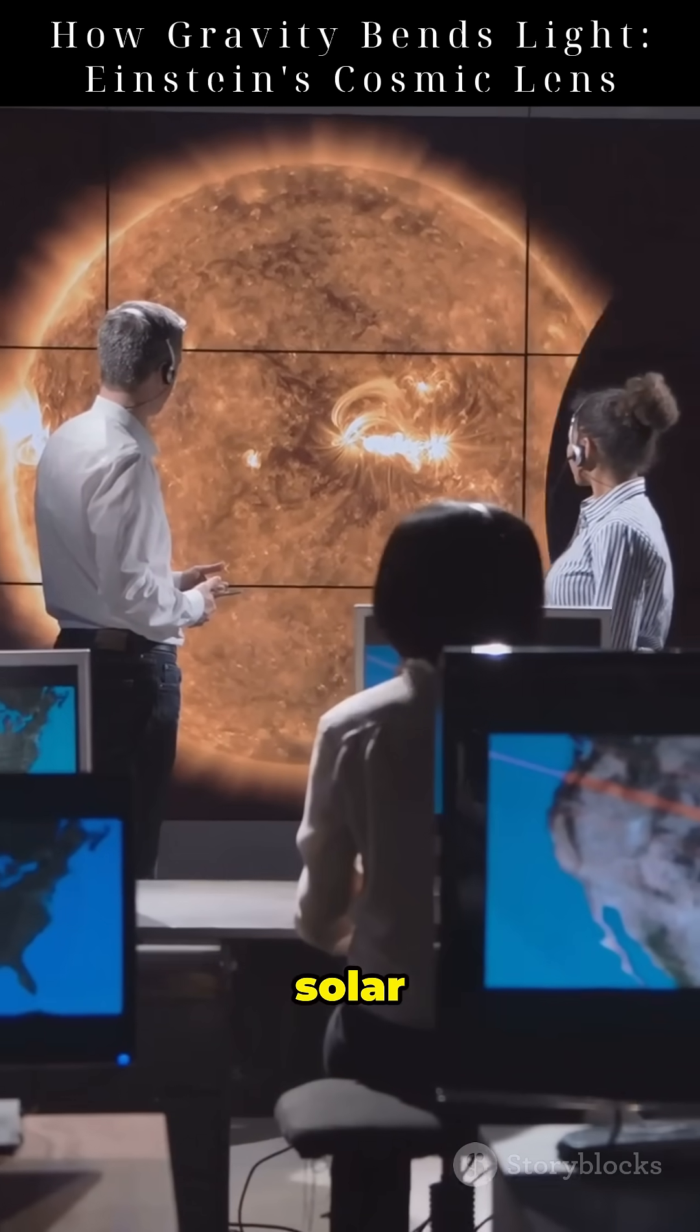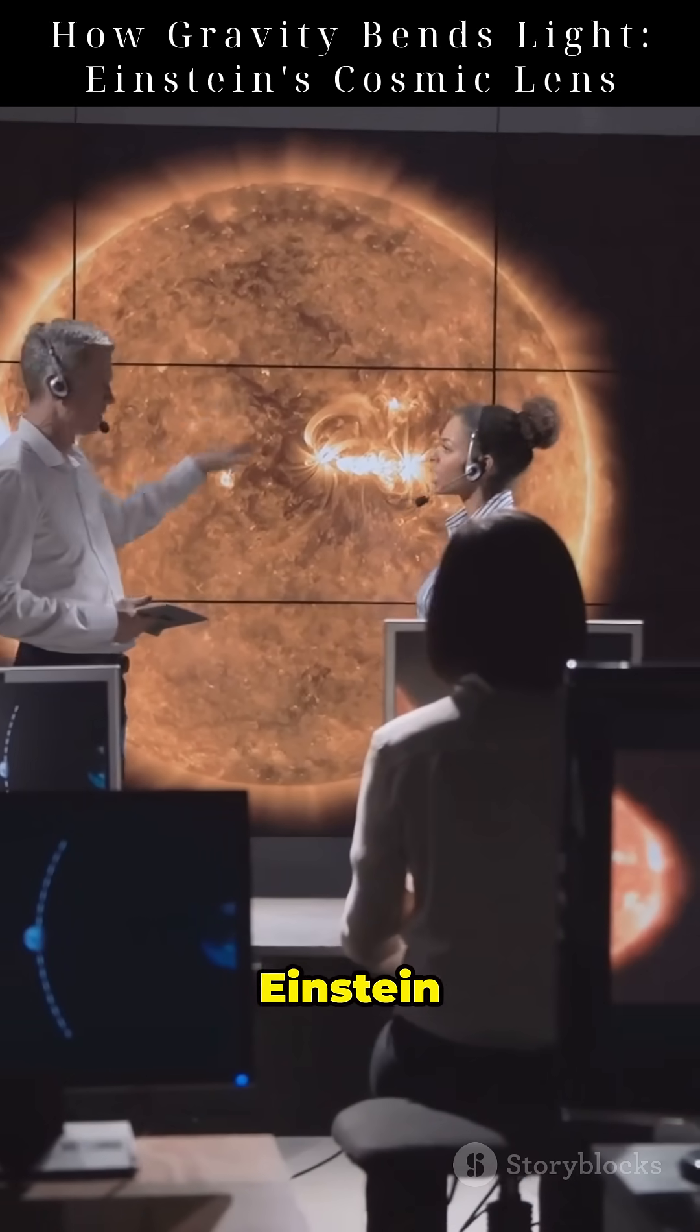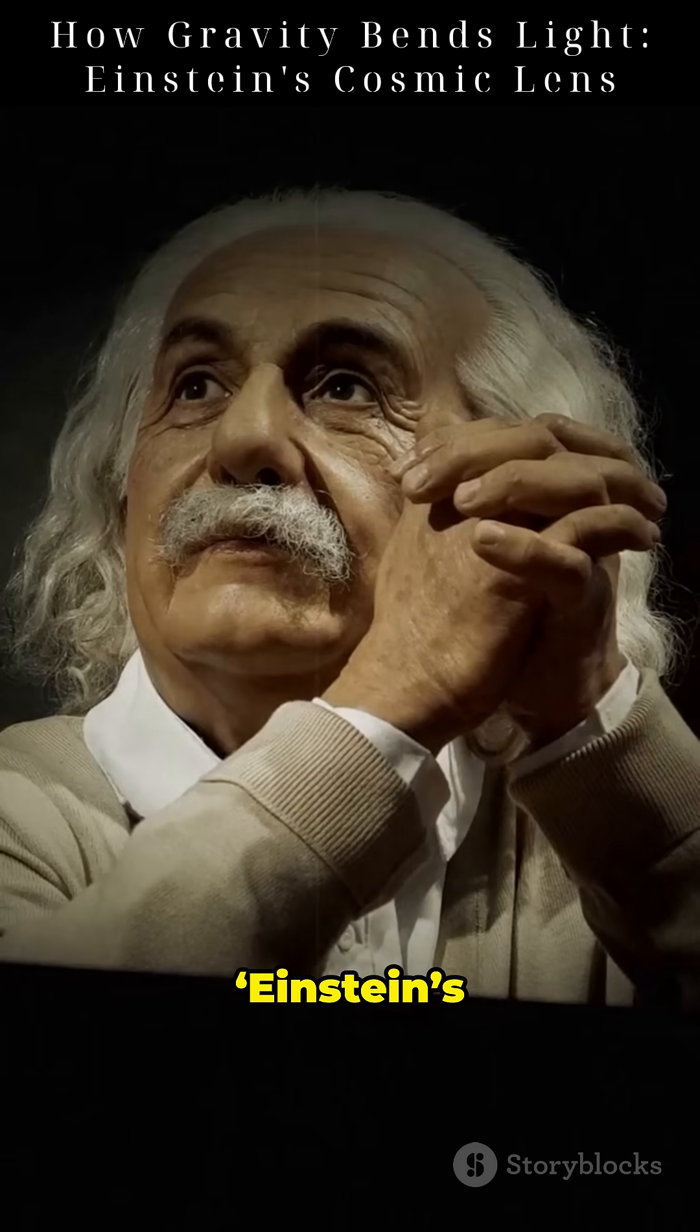During a 1919 solar eclipse, scientists measured starlight bending around the sun, just as Einstein predicted. Headlines read, 'Einstein's theory triumphs.'